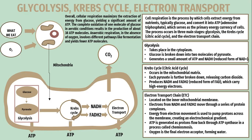The electron transport chain is located on the inner mitochondrial membrane. The electrons from NADH and FADH₂ move through a series of protein complexes. Energy from electron movement is used to pump protons across the membrane, creating an electrochemical gradient. ATP is generated as protons flow back through ATP synthase in a process called chemiosmosis. Overall, cellular respiration maximizes the extraction of energy from glucose, yielding a significant amount of ATP.